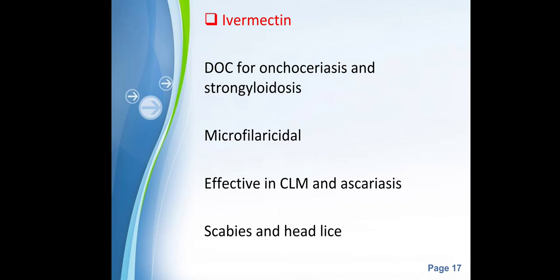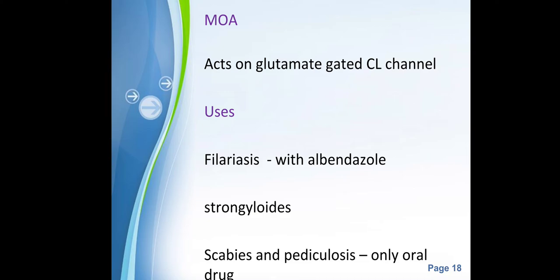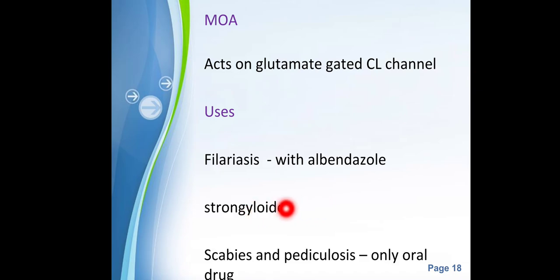The next important drug is ivermectin, now well known for its use in treating COVID-19, but primarily an anti-parasitic drug. It is the drug of choice for onchocerciasis and strongyloidiasis, and is micro-filaricidal. It is also effective in cutaneous larva migrans (CLM) and ascariasis. For scabies and head lice, it is the only orally available drug — otherwise these conditions are treated with topical therapy.